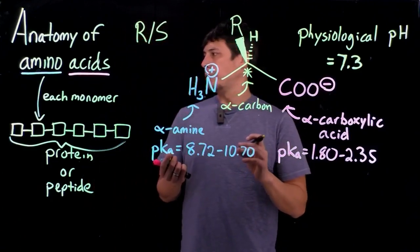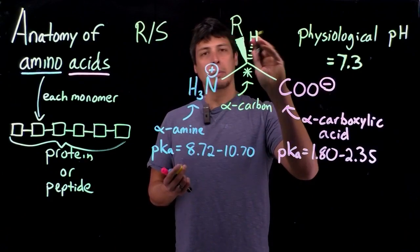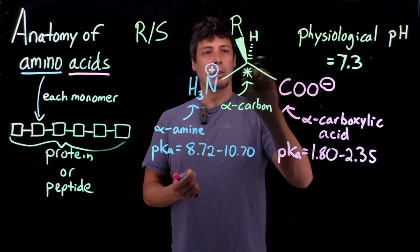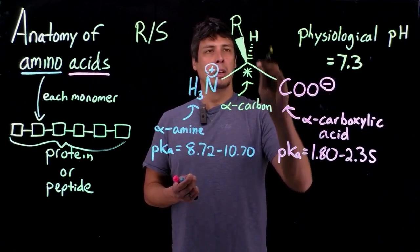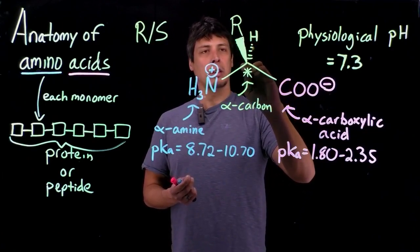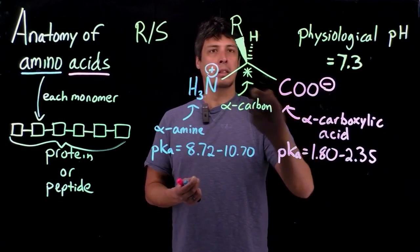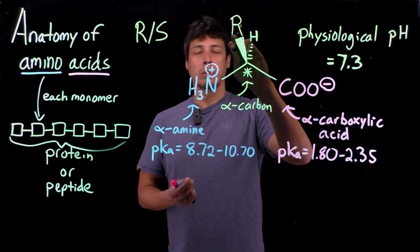And so, just as a refresher, the way we do this is that we assign priorities to all these based on the molecular weights of what's connected to the chiral carbon. So, we look at, we start at the carbon, we look at each of the atoms connected. So, the R group, typically, what we...